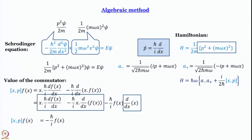Therefore the value of the commutator [x,p] = −ℏ/i = iℏ. This is a very fundamental relationship that appears in many applications of quantum mechanics. We have just derived it, and we will now see how it makes the subsequent treatment extremely simple and useful.